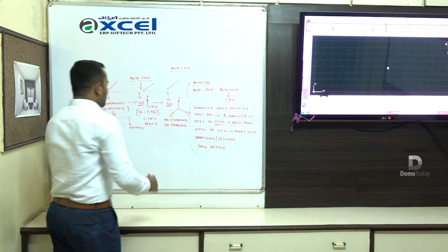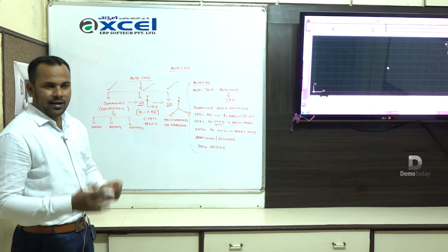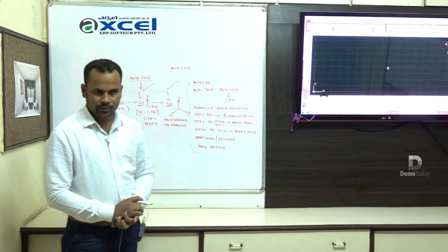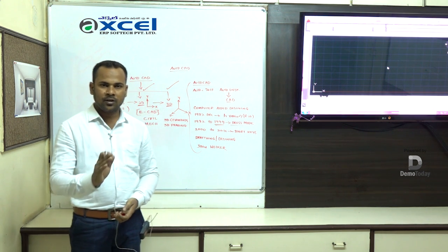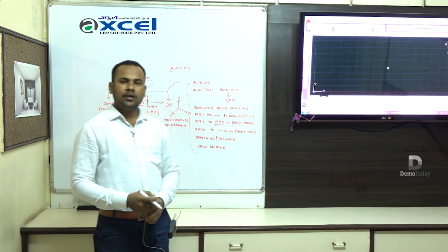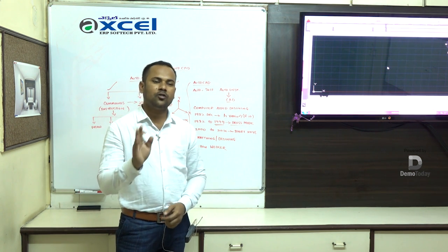This is about learning AutoCAD in three stages. The duration is one month or 45 days. Daily you have one hour class and one hour practicals.